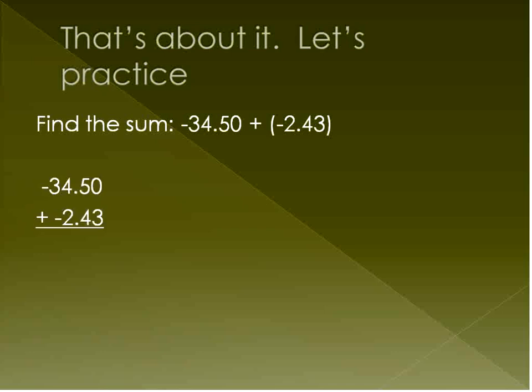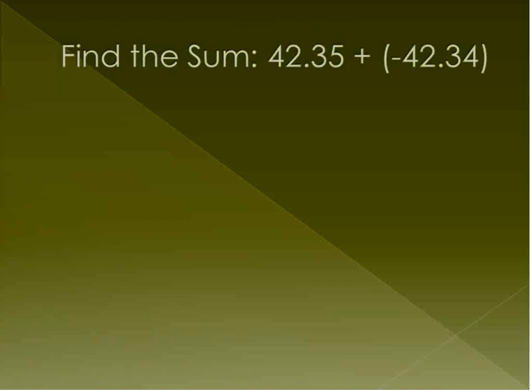So let's go ahead and practice using what we know about adding and also what we know about adding decimals. We line up the decimals here. In this case, the signs are the same. We have a negative 34.5 and a negative 2.43. So the signs are the same, so we just add them up and keep the sign. That's it. And then we're done. So 34.5 and 2.43 will give us 36.93. Because they're all negative, our answer is negative.